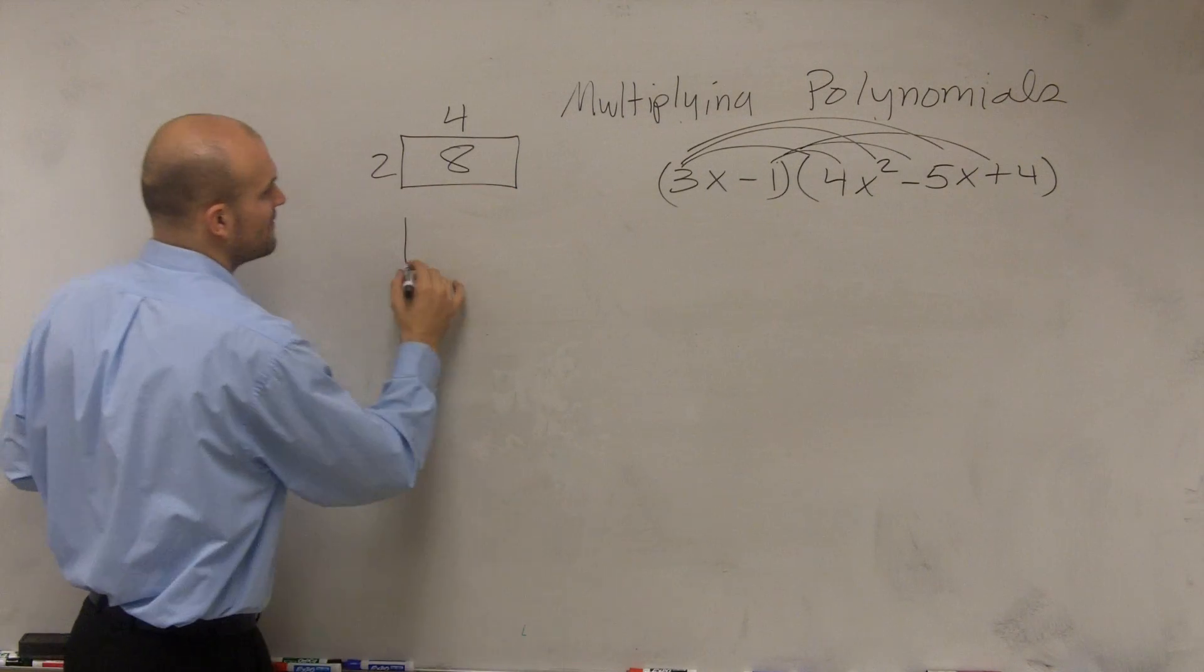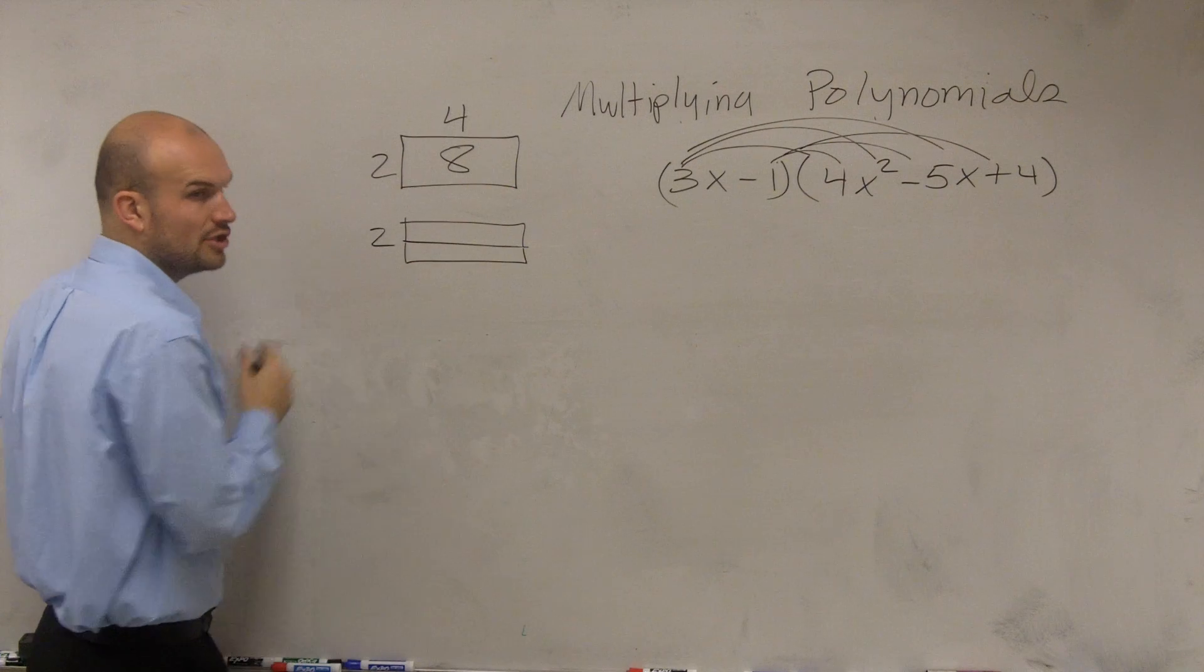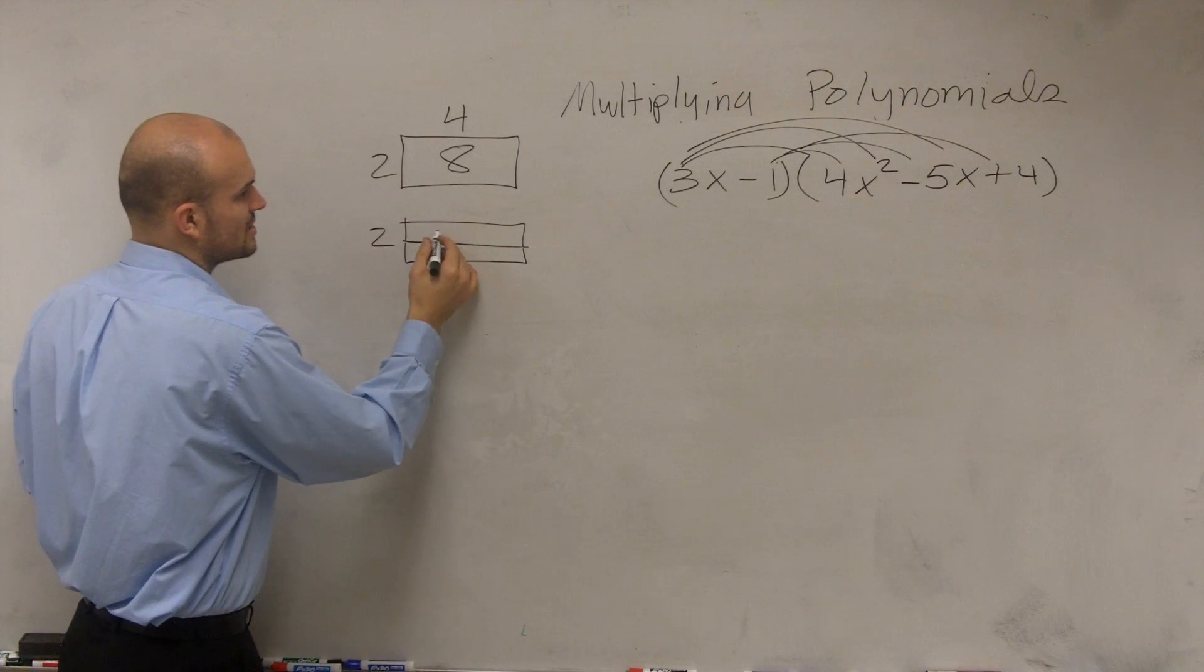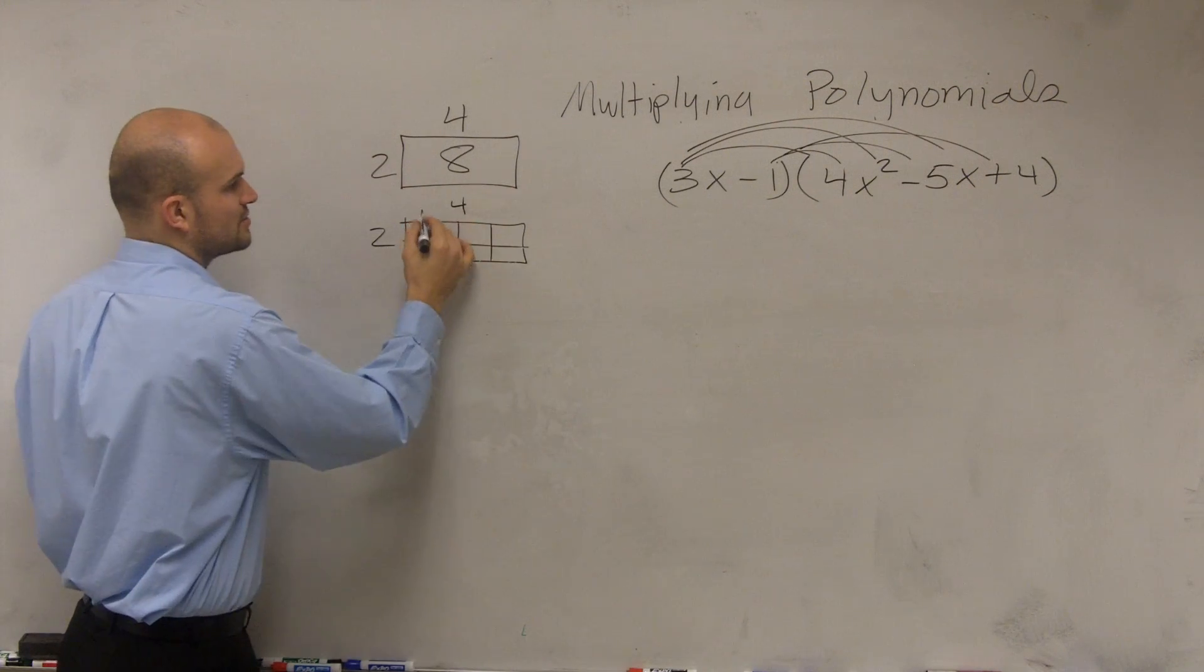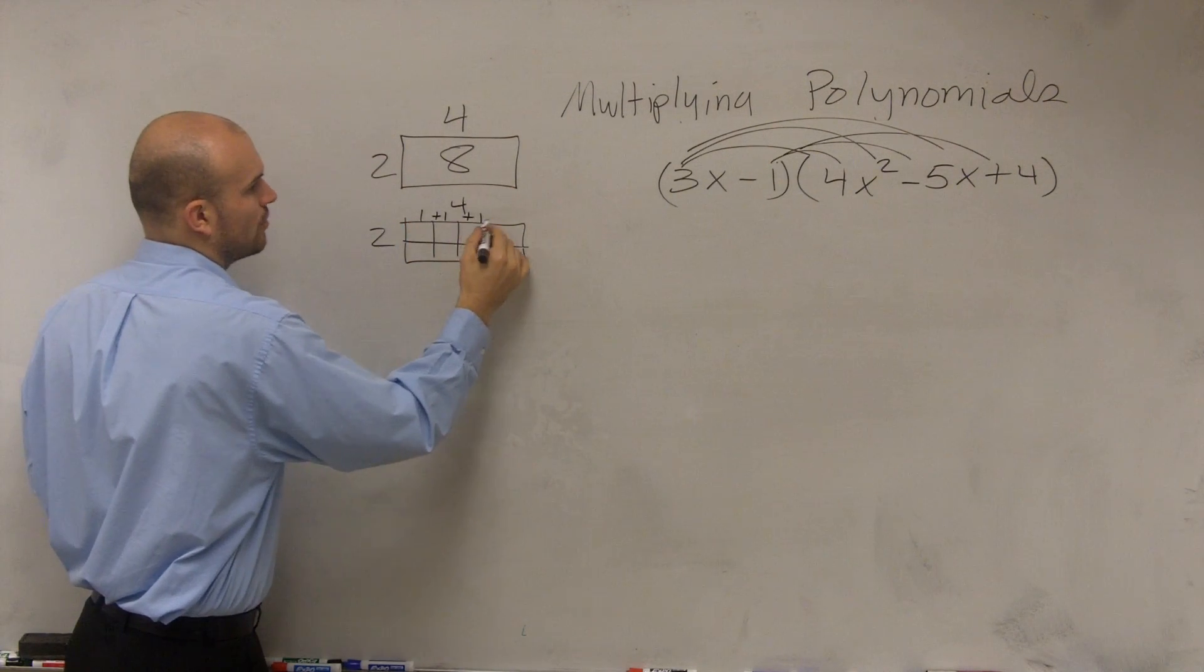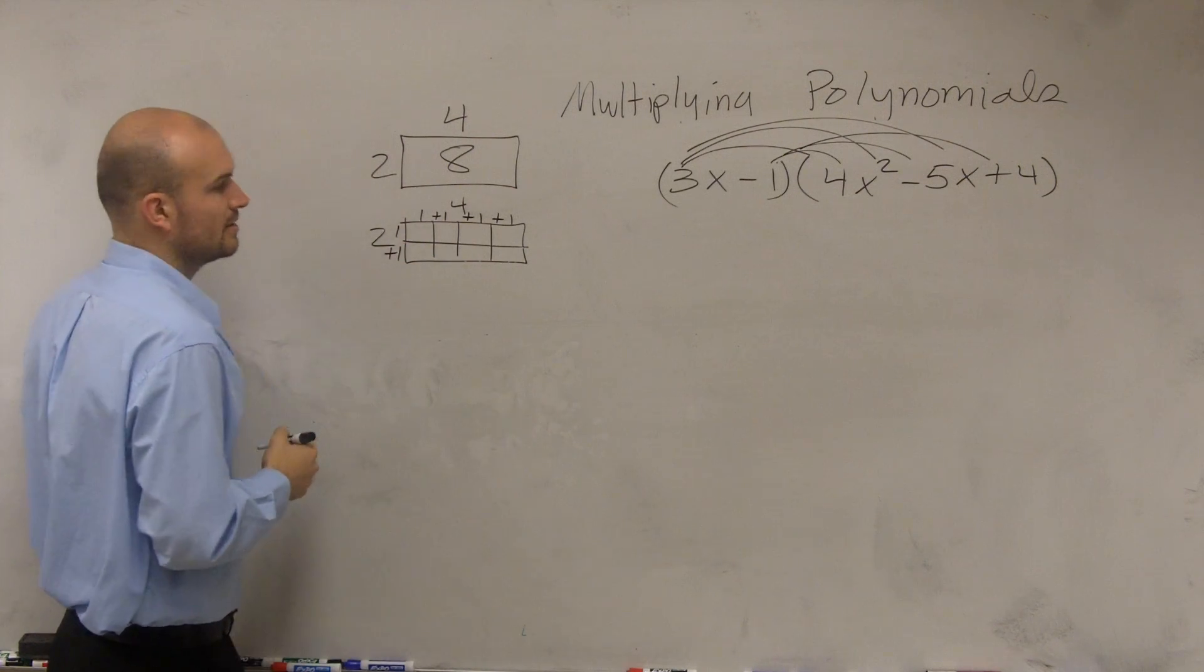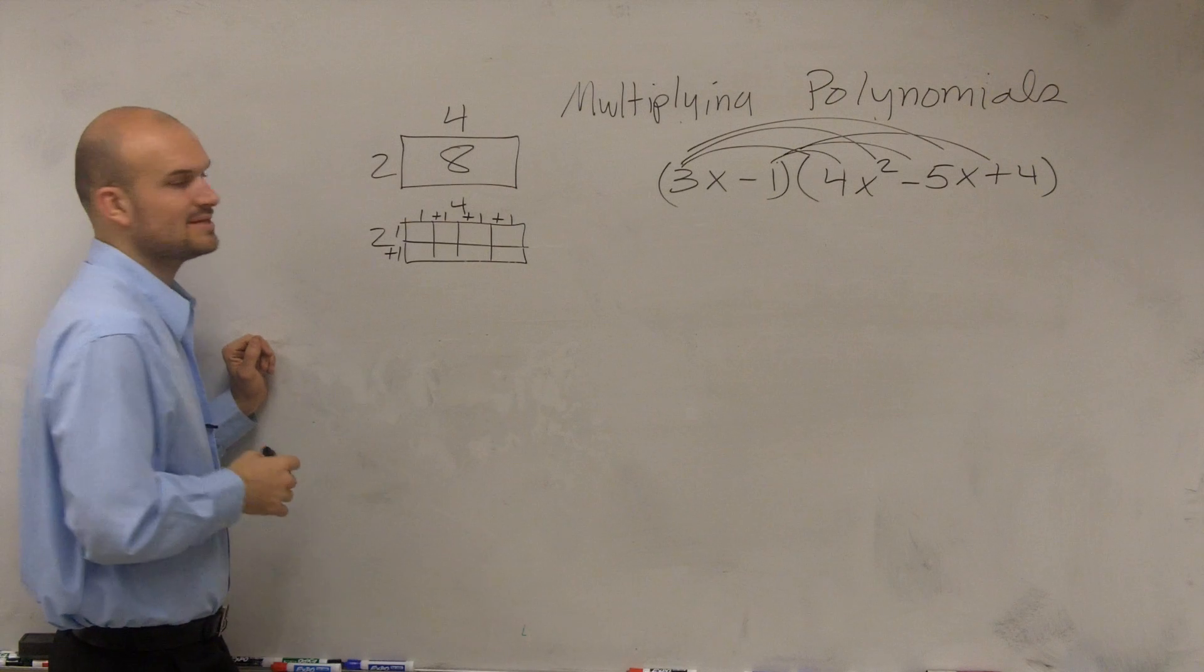Now one thing I want you guys to notice is what if I broke it up? If I broke this box, if I said this was 2 and I broke that up into 2 sections, and then I broke this up into 4, where this is 1 plus 1 plus 1 plus 1, and this is 1 plus 1. Now if I found the area of each one of these little boxes, let's see if it adds up to 8.